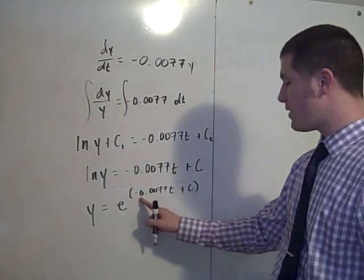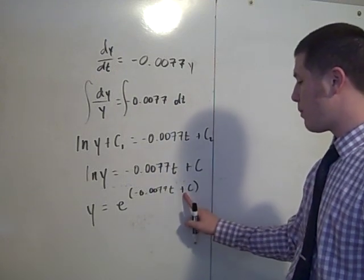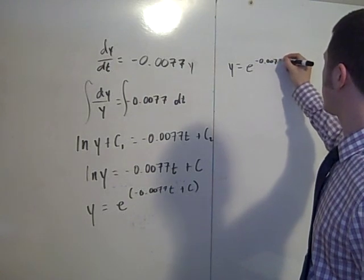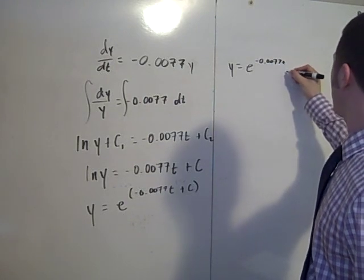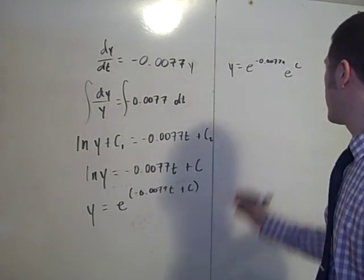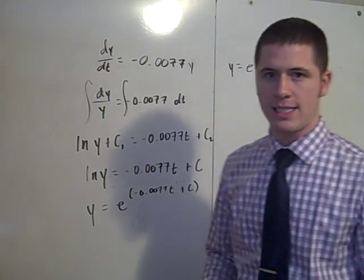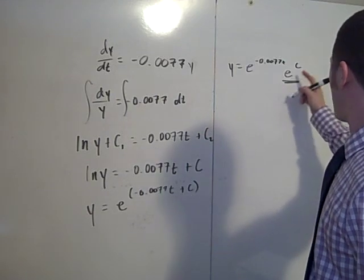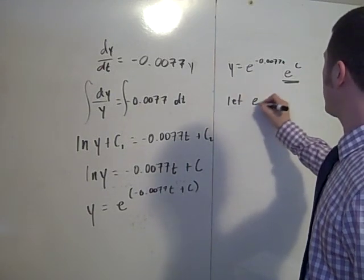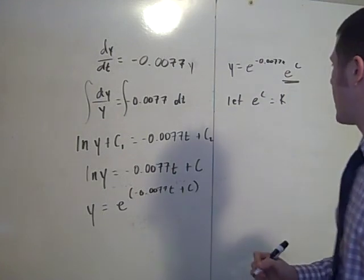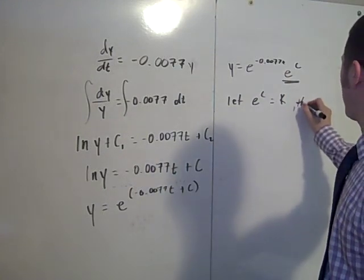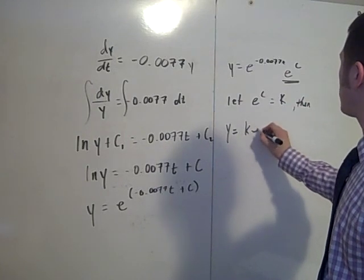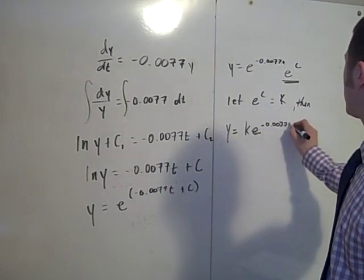So here I have e to the sum of two numbers, which is to say that y equals e to the negative 0.0077t times e to the c. e to the c, this number is just a constant. It's just a number, right? So I'm going to let e to the c be equal to k, some constant k. Then what we have is y equals k times e to the negative 0.0077t.